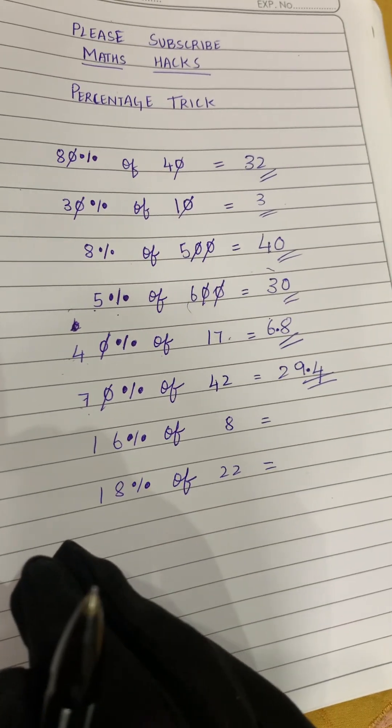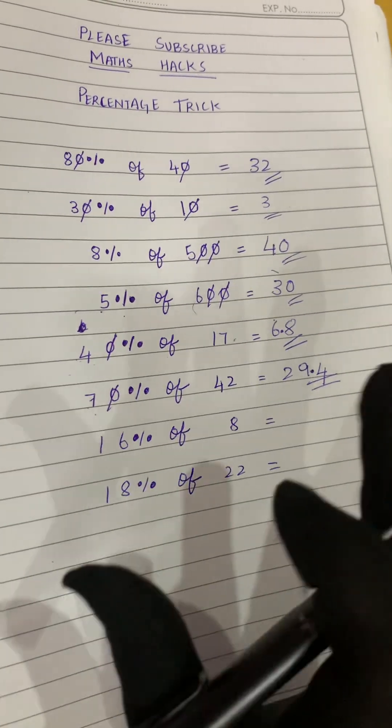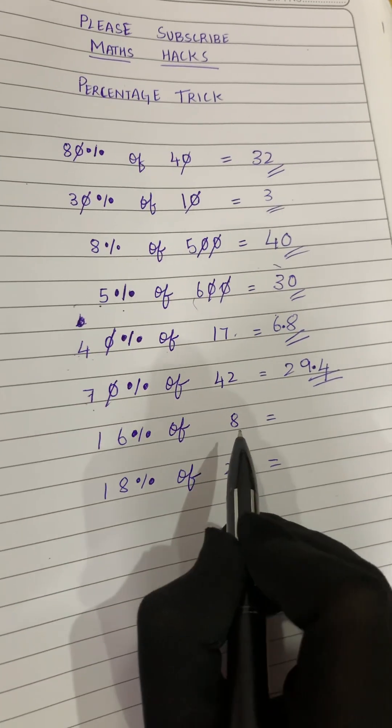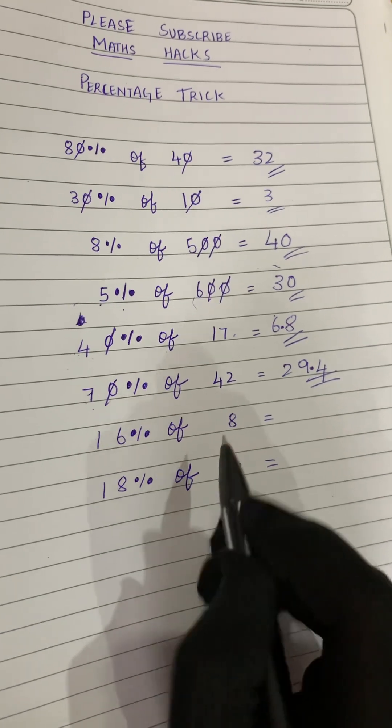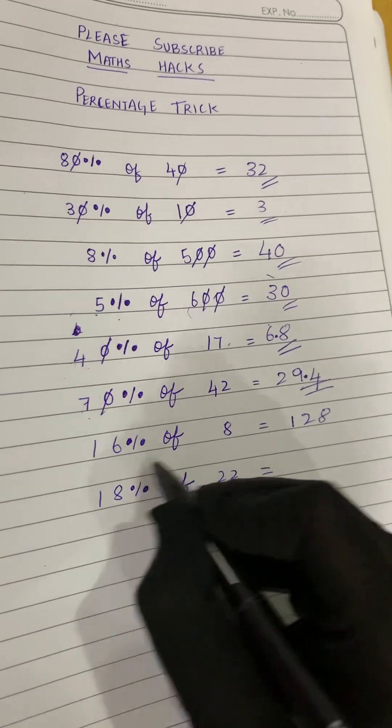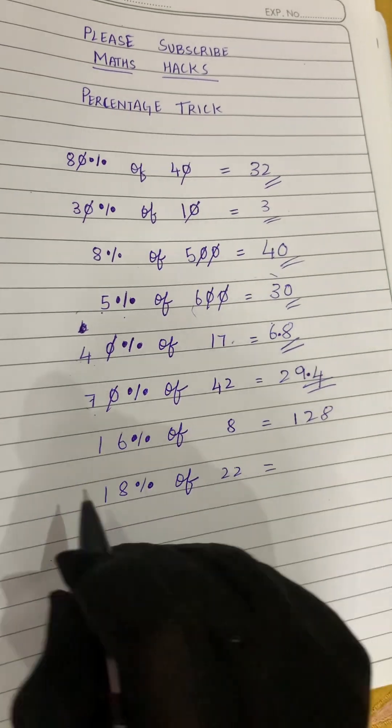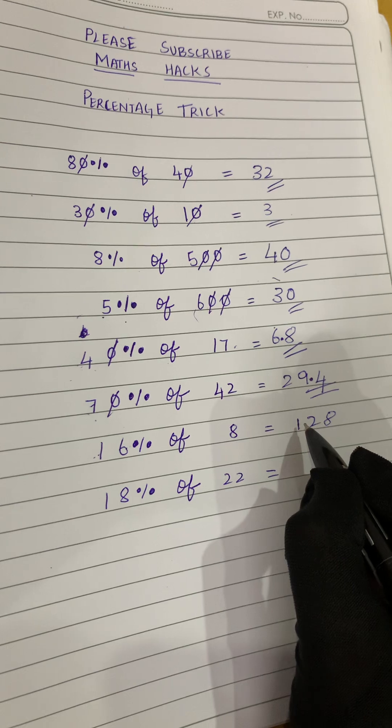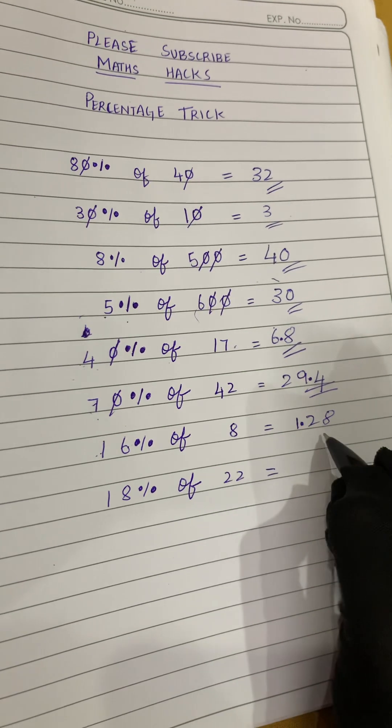Now 16 percent of 8. We don't have any zeros here, so there is no need to cancel any zero. We will directly multiply 16 into 8. So 16 into 8 is 128, right? So we will put a decimal point after two digits, so we will get 1.28 as our answer.